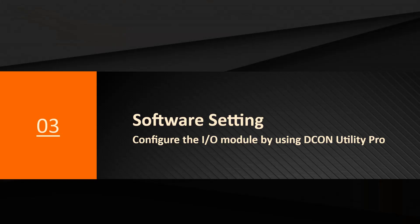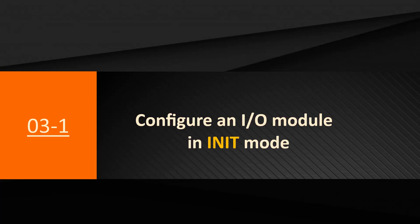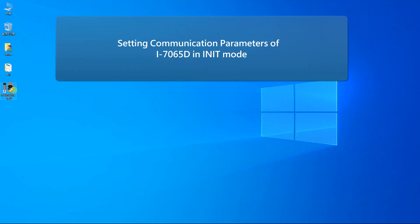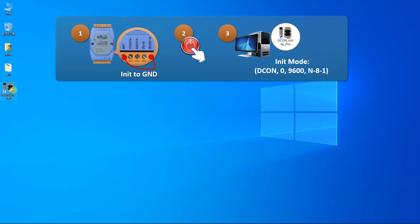Next we will introduce how to use the DCON Utility Pro to configure modules. If the module's current protocol setting is DCON, the communication parameters can only be changed in init mode. The I7000 series only supports the DCON protocol, so we need to change communication parameters in init mode. Set the init wiring, power up the module, and execute DCON Utility Pro on the PC.